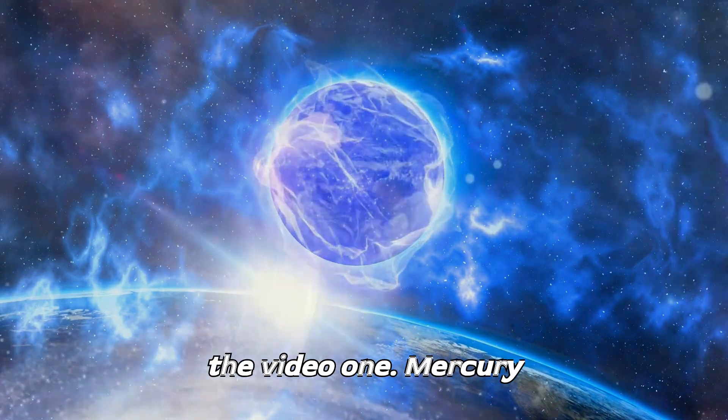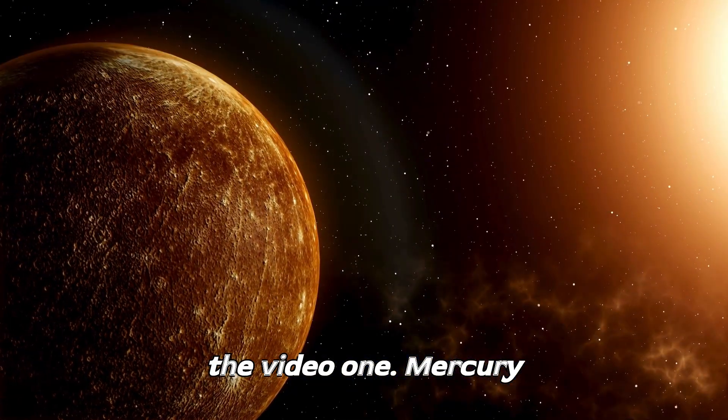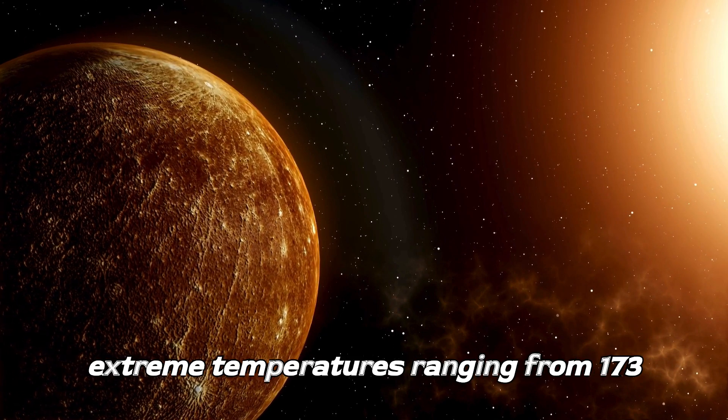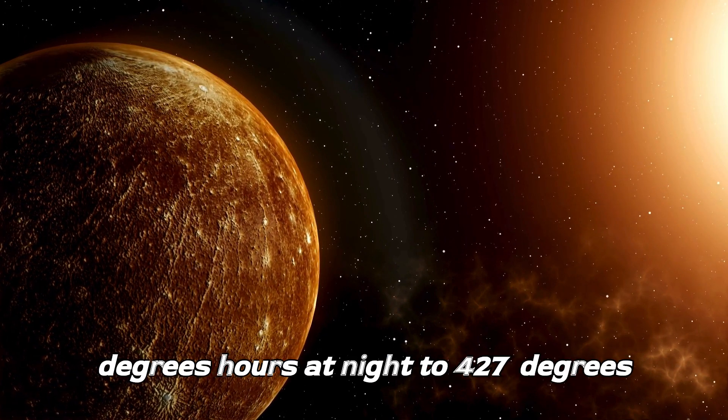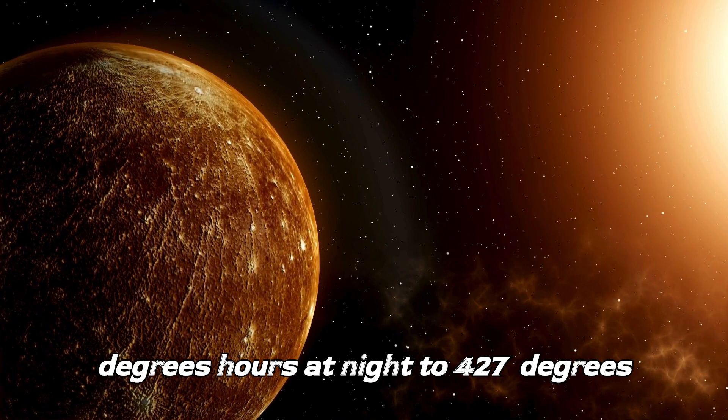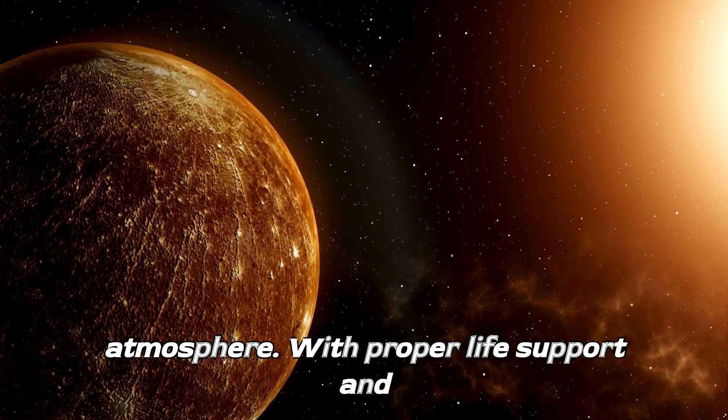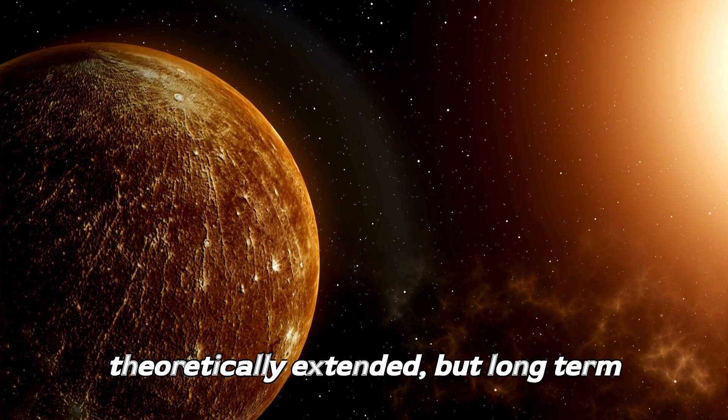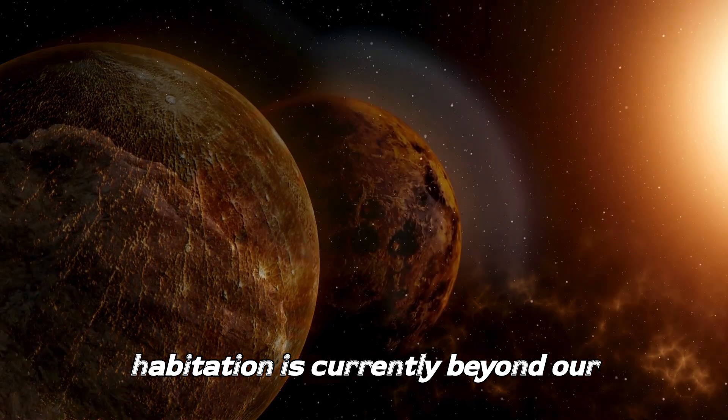So let's start the video. 1. Mercury. Without protection, humans wouldn't survive more than a few seconds, due to extreme temperatures ranging from 173 degrees Celsius at night to 427 degrees Celsius during the day, and lack of atmosphere. With proper life support and shielding, survival could be theoretically extended, but long-term habitation is currently beyond our capabilities.